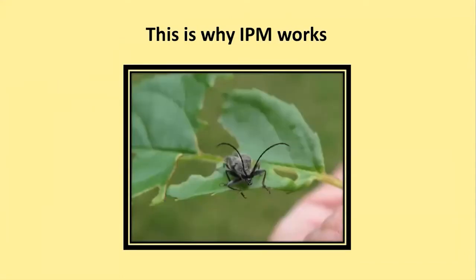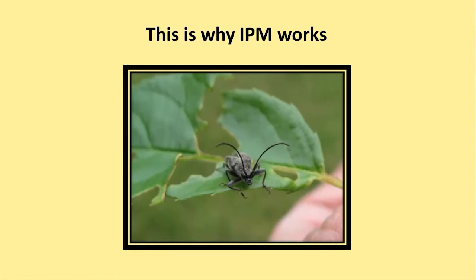This picture illustrates why IPM works. If you were monitoring your garden and saw a beetle on a chewed leaf, you might think he's the culprit. But look closer—do you see the brown edges on those chewed marks? That means the leaf was chewed some other time, not right now. So you'd want to identify the beetle first: is it beneficial or a pest? If it's beneficial, put it back in your garden. If it's a pest, then dispose of it.